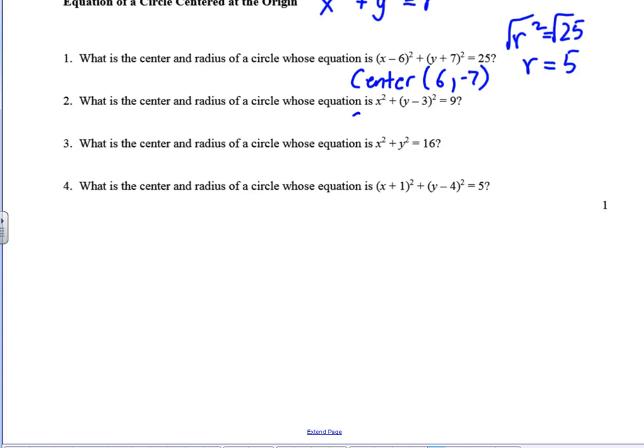Alright, so number 2, what is the equation for the center? Are we doing anything to the x value here? No, so the coordinates for that would be 0. And minus 3, we need to switch the sign. So the minus 3 is really positive 3. Good. And so then, would the radius be 9? No. Good. r squared is 9. So the square root of that would be 3. Okay, so go ahead and do 3 and 4.